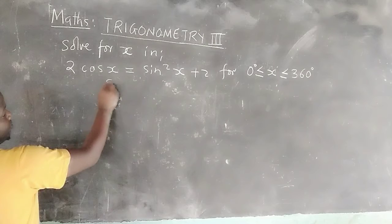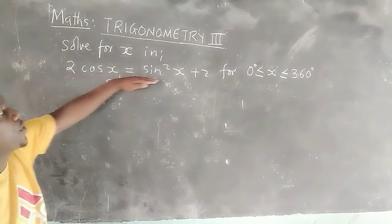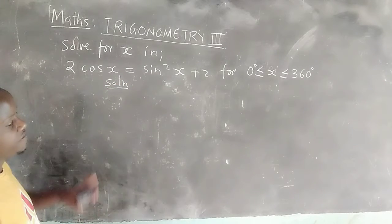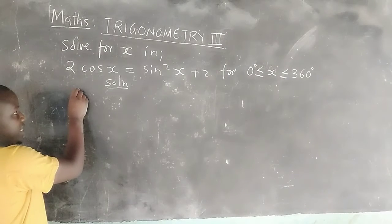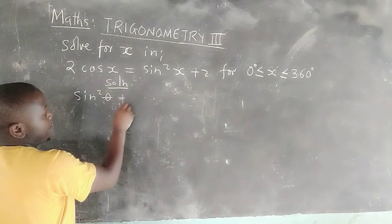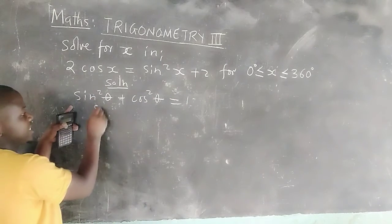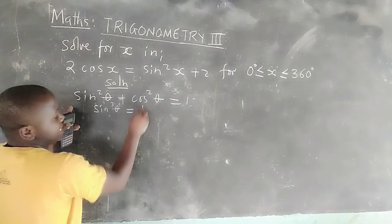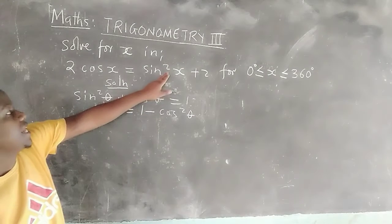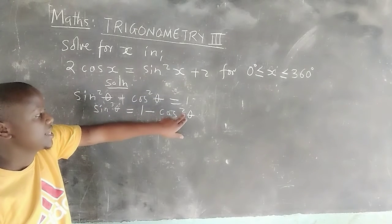Solution. In this case, we can see we have cosine on one side and sine on the other. We recall from the identities that sin²θ + cos²θ = 1, which means sin²θ = 1 − cos²θ. So, instead of sin²(x), we can substitute 1 − cos²(x).